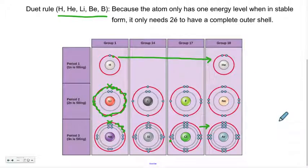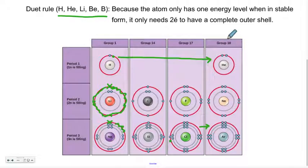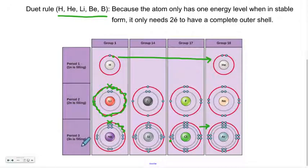In summary, what you should retain from this lesson is that the group number indicates how many valence electrons an element has — those are the electrons on the last shell, with the exception of helium which has two rather than eight. And the period number indicates how many energy levels an element in that row should have. I hope this was clear. If you have any questions, leave them in the comments below, and it'll be my pleasure to help you out. See you around for another lesson — have a good one.